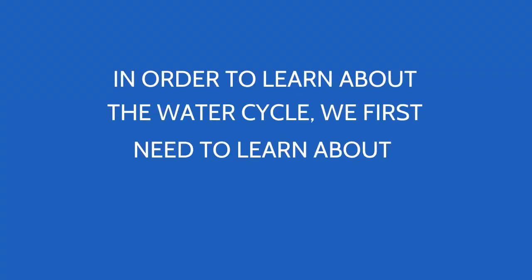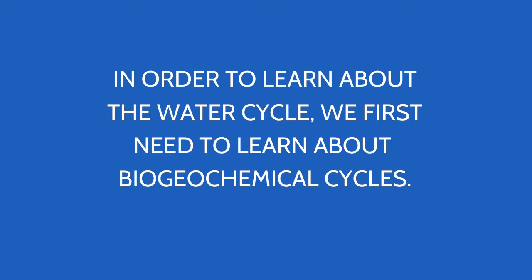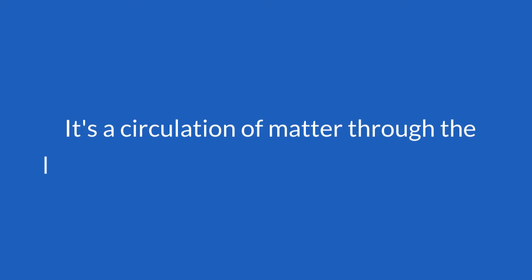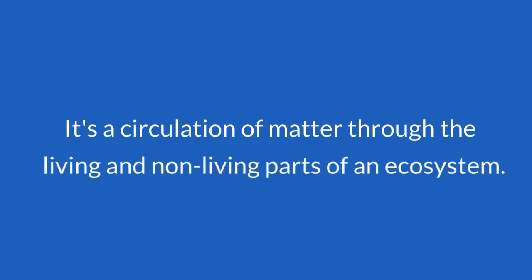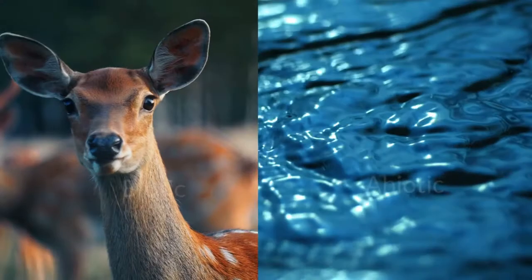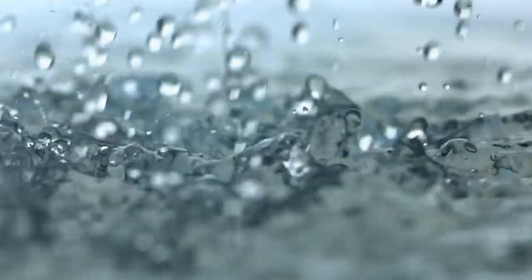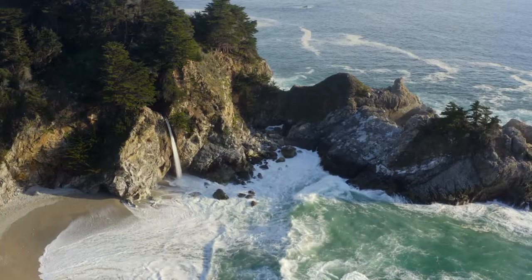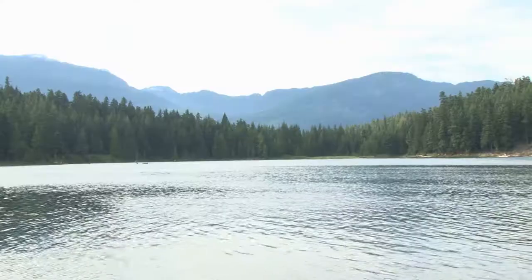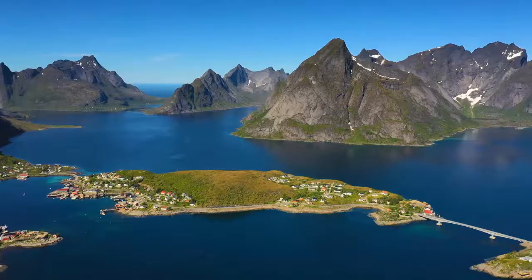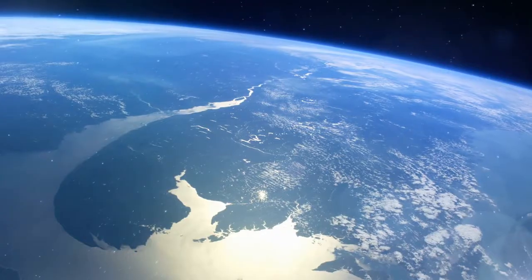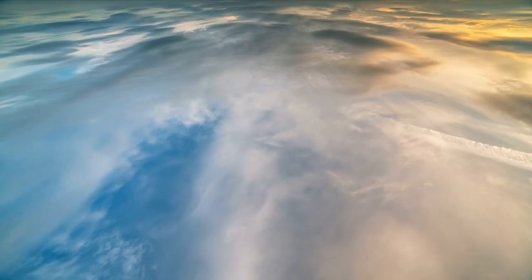In order to learn about the water cycle, we first need to learn what a biogeochemical cycle is. It's a circulation of matter through the living and non-living components of an ecosystem — the biotic and the abiotic. These substances are recycled or accumulated. Every drop of water that is on the planet is all the water that has ever been on the planet, meaning that the water is cycled — a continuous movement of water throughout the planet and its atmosphere.